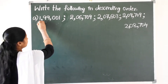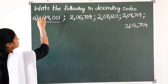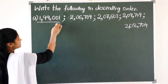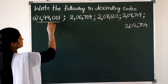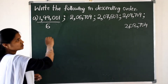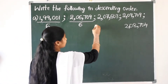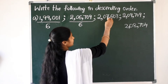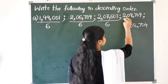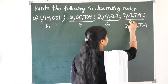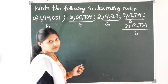So, compare the digits in all numbers. First, how many digits are there in the first number? 1, 2, 3, 4, 5, 6 — so here also a 6-digit number. 1, 2, 3, 4, 5, 6 — 6-digit number. This is also a 6-digit number. And this is also a 6-digit number.